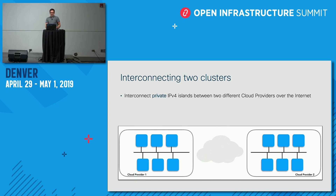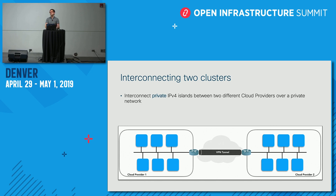The packet is dropped because you cannot route private IP addresses over the internet — that's why you need NAT and public IP addresses. The solution is to have a direct connection between the two sites: either a physical direct connection (like the Direct Connect service cloud providers offer) or a logical connection like a VPN tunnel set up between two endpoints, typically a virtual router.